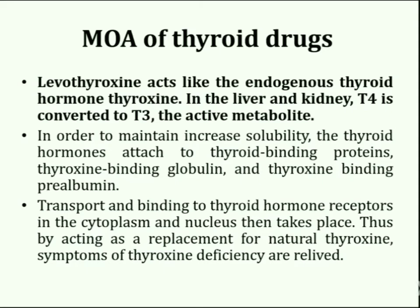Next is the mode of action of thyroid drugs. Levothyroxine acts like the endogenous thyroid hormone thyroxine. In the liver and kidney, T4 is converted to T3, which is the active metabolite. To maintain solubility, the thyroid hormones attach to thyroid binding proteins such as thyroxine binding globulin and thyroxine binding prealbumin. After this, transport and binding to thyroid hormone receptors in the cytoplasm and nucleus takes place. Thus, it acts as a replacement for the natural hormone thyroxine and symptoms of thyroxine deficiency are relieved.